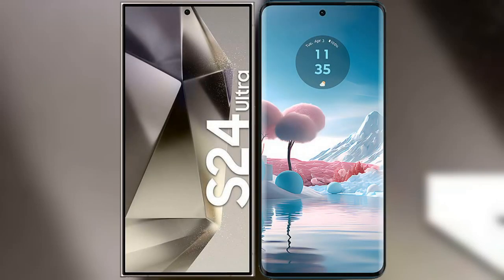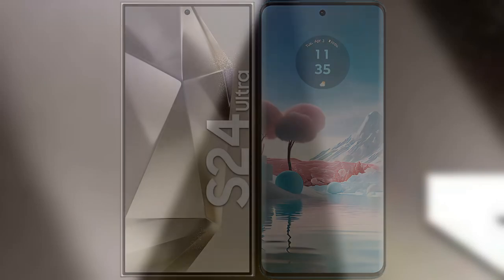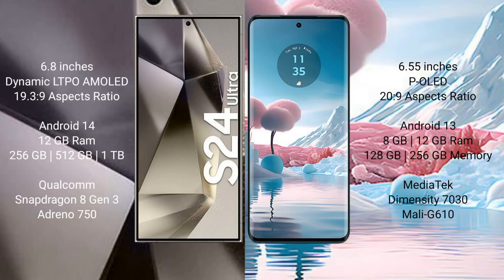I will compare the new Samsung Galaxy S24 Ultra with Motorola Edge 40 Neo. Samsung Galaxy S24 Ultra comes with a 6.8-inch Dynamic LTPO AMOLED display and aspect ratio 19.3:9. Motorola Edge 40 Neo comes with a 6.55-inch pOLED display and aspect ratio 20:9.